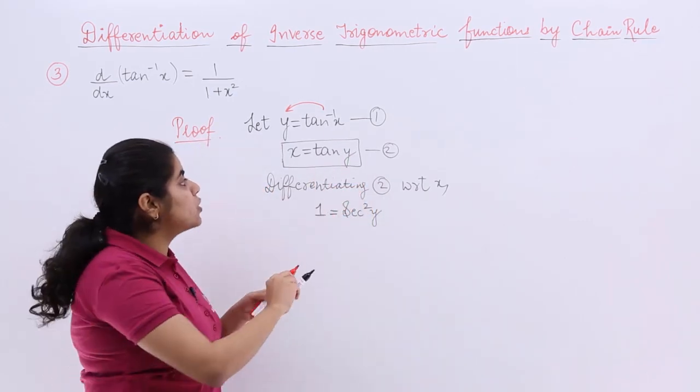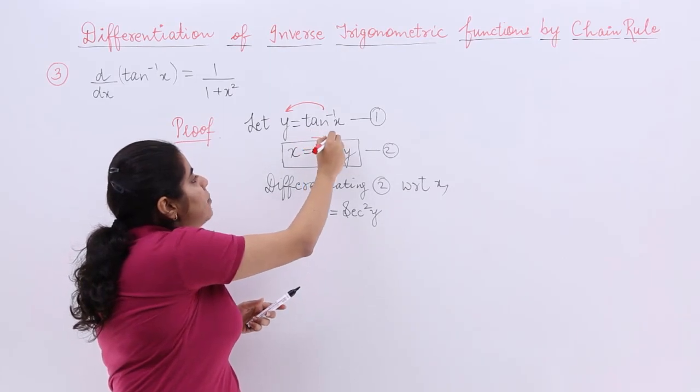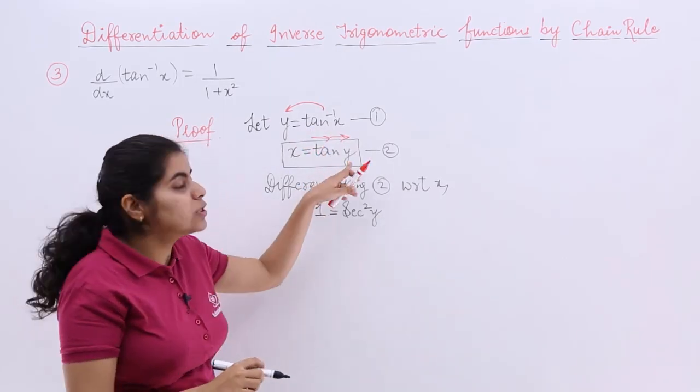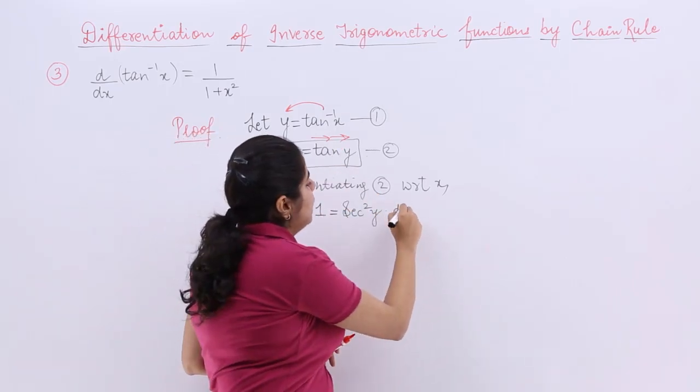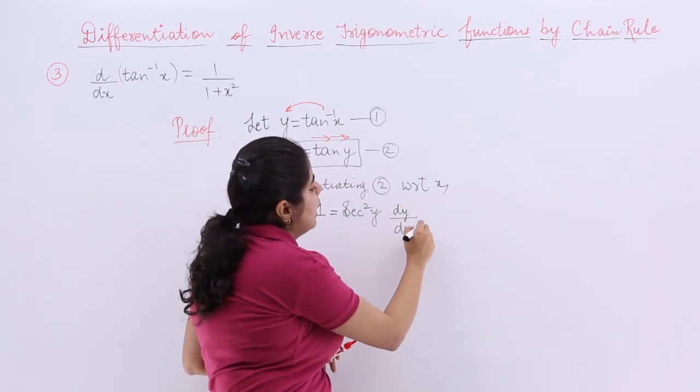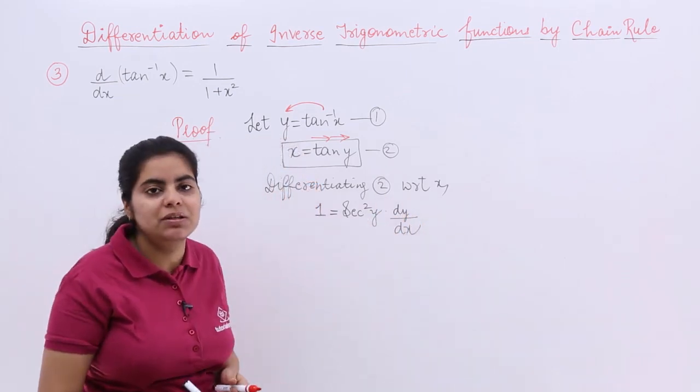Tan y is giving me secant square y because secant square y is the differentiation of tan y. And because you are dealing with y not only x, the differentiation of y is dy by dx. Y with respect to x differentiated gives me dy by dx.